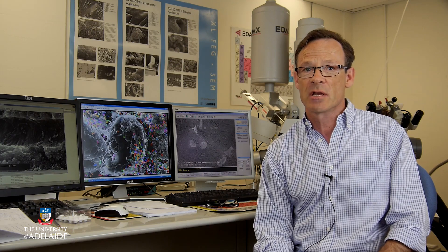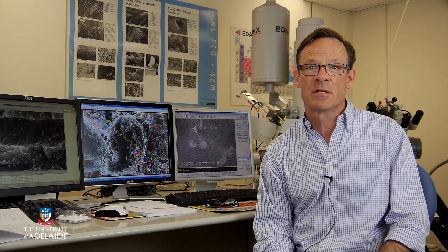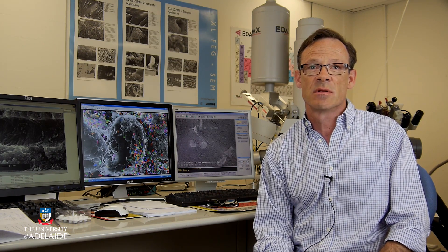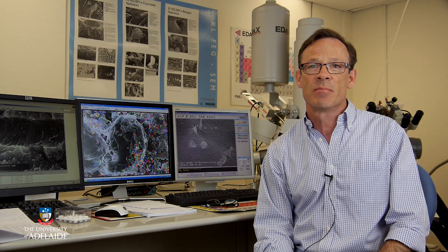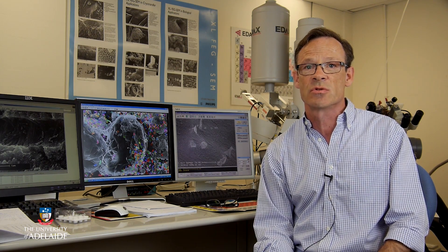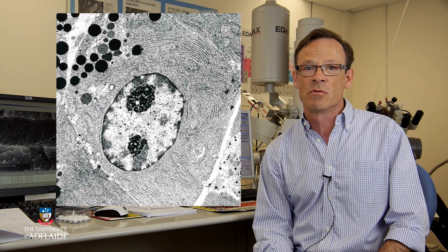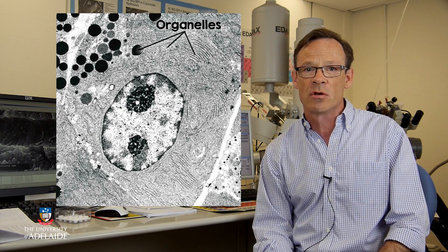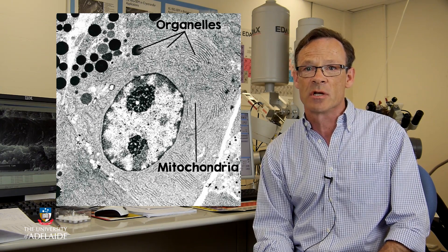Electron microscopes like this device are larger and more powerful microscopes that use a beam of electrons rather than a beam of light to produce an image of a cell. Transmission electron microscopes can magnify specimens by two million times, making it possible to clearly identify the internal structures of a cell. As you can see in this image of a cell viewed by an electron microscope, it's possible to see individual organelles within the cytoplasm, like mitochondria, as well as chromatin in the nucleus.